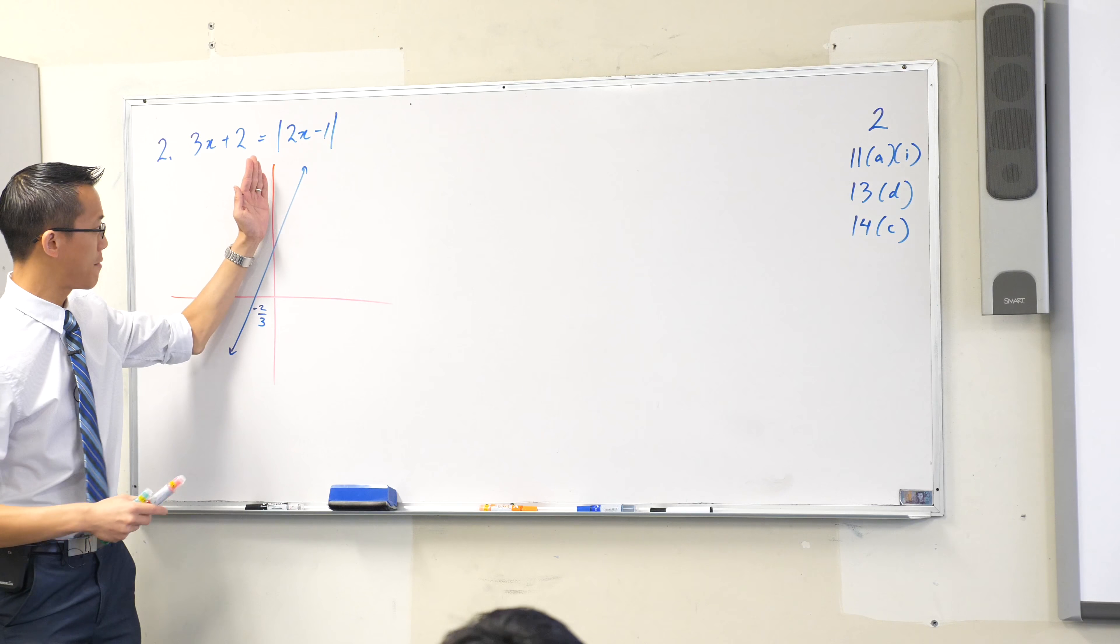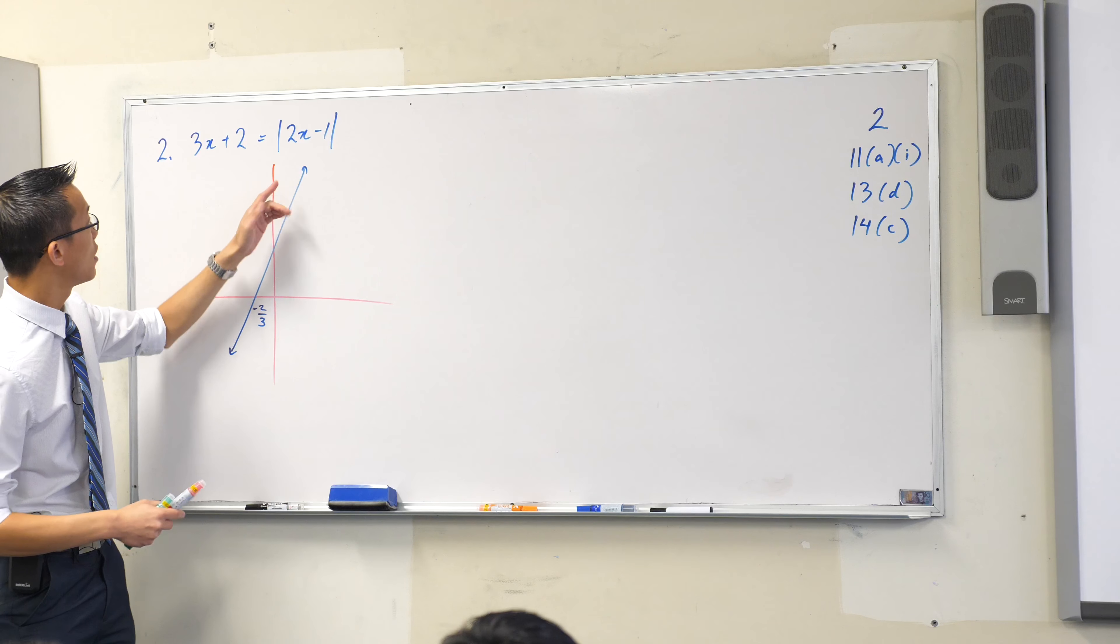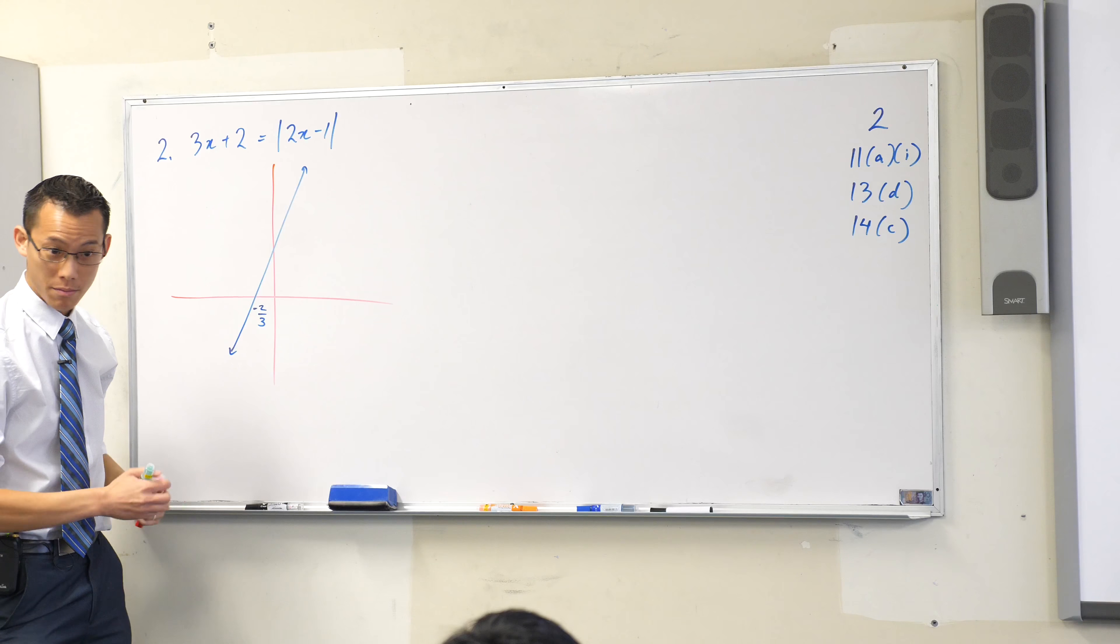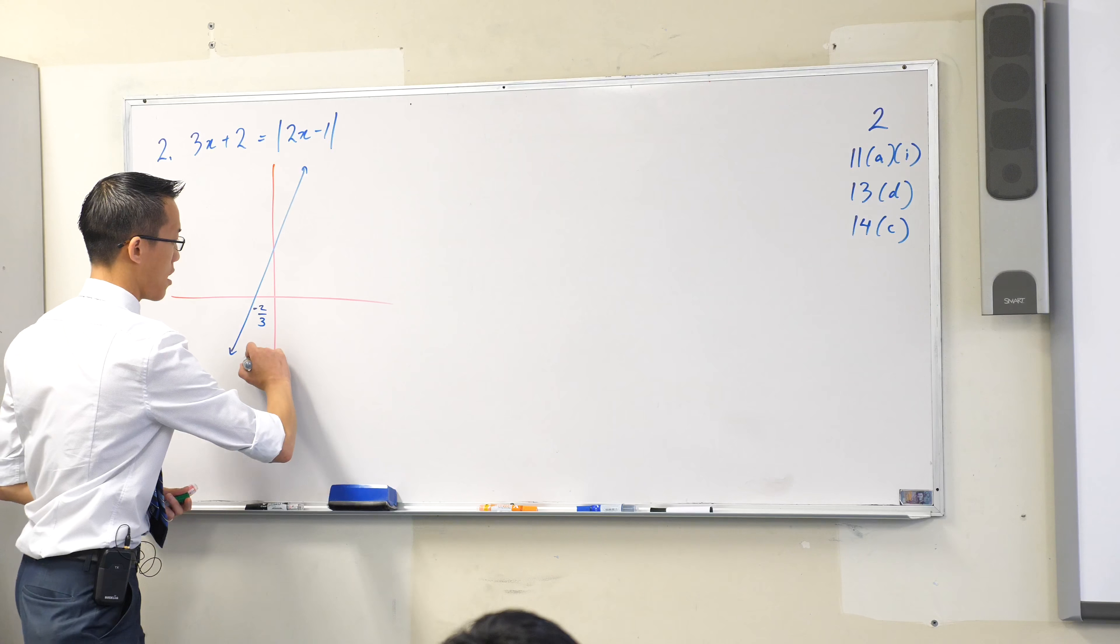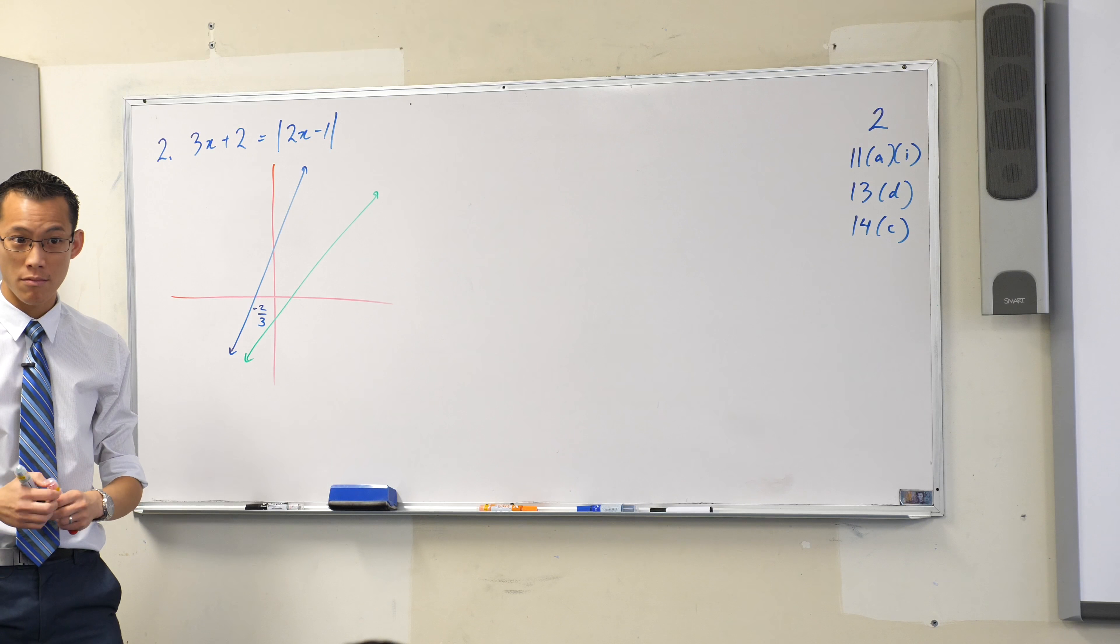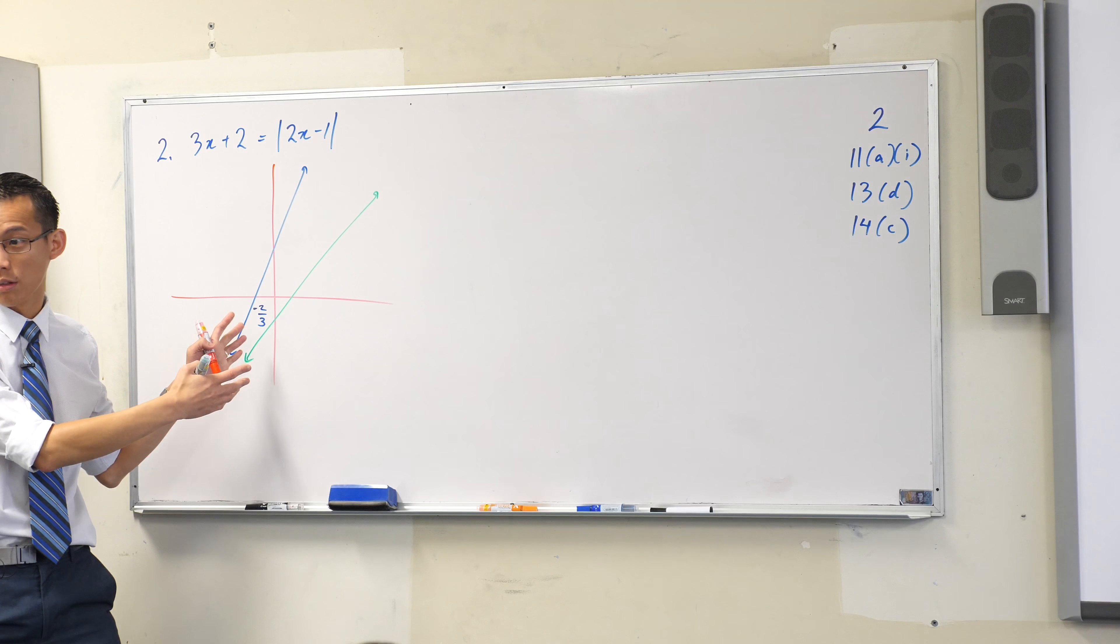So if I'm calling that gradient 3, maybe I'll call that gradient 2. It's got a minus 1 over there, so this has not been shifted up, it's shifted down. So therefore, this is kind of what 2x minus 1 on its own would normally look like.